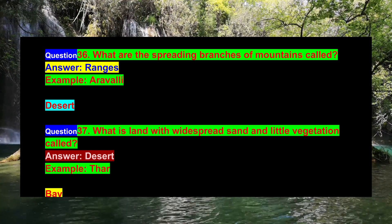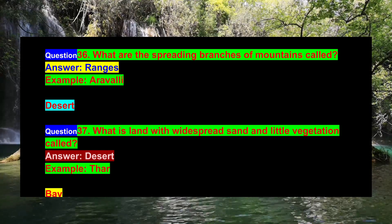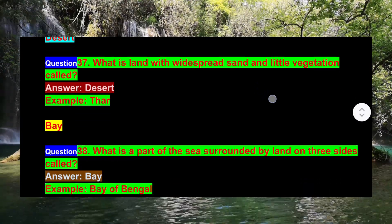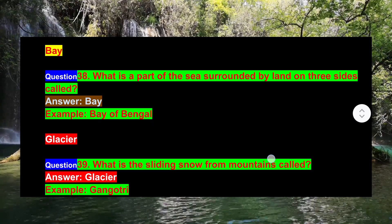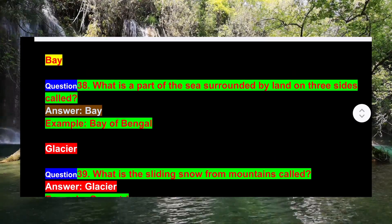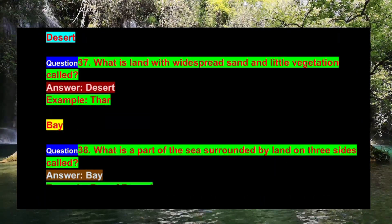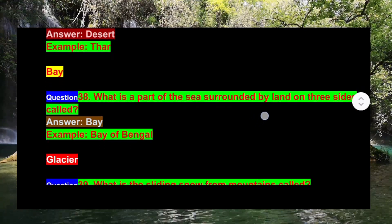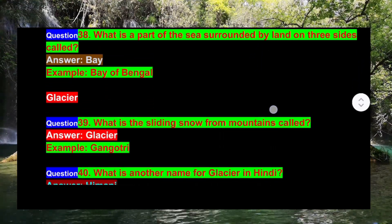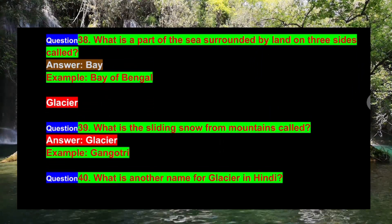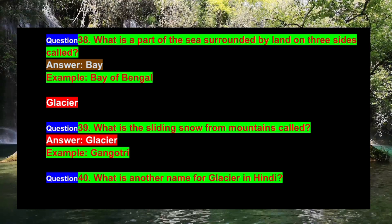Question 38: What is a part of the sea surrounded by land on three sides called? Answer: Bay. Example: Bay of Bengal. Question 39: What is the sliding snow from mountains called? Answer: Glacier. Example: Gangotri.